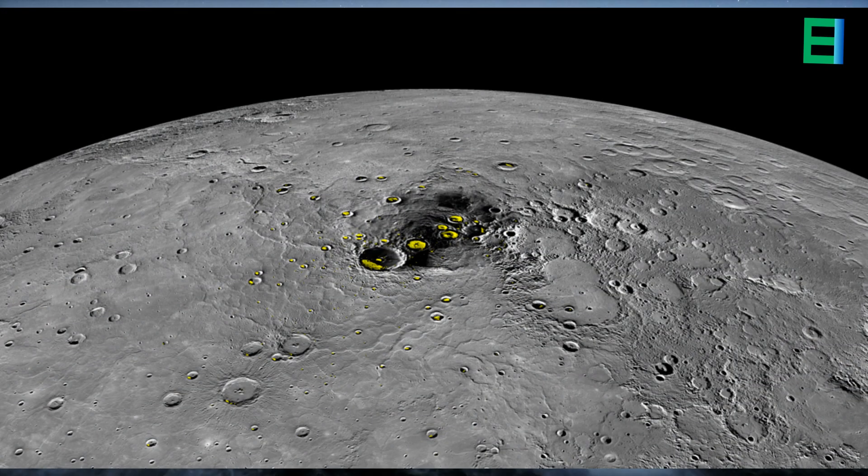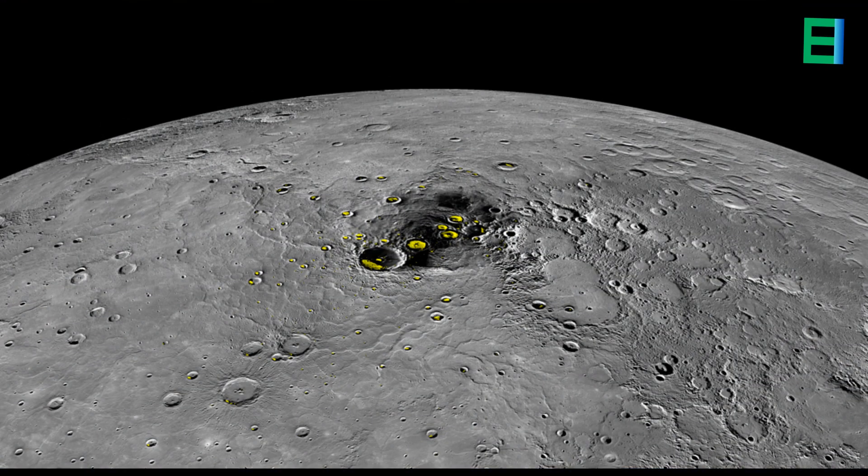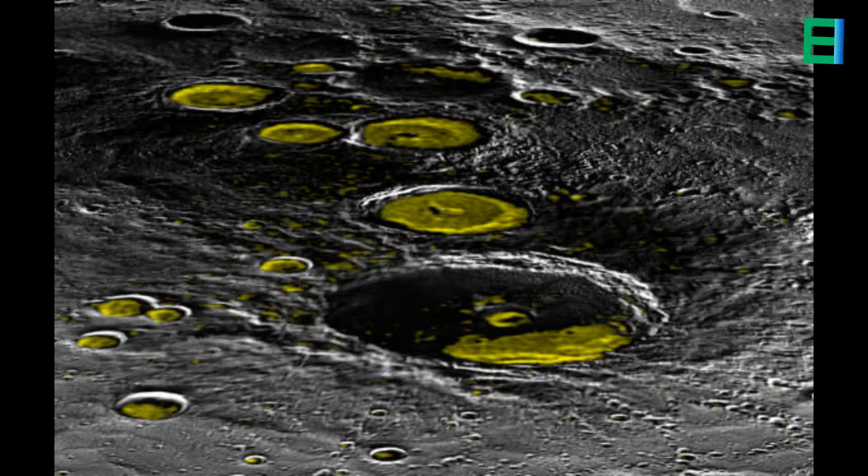In these extremely cold areas, scientists have detected deposits of water ice on Mercury's surface. The ice is believed to be mixed with other volatile compounds such as sulfur and organic molecules, which help to protect it from sublimating into space.